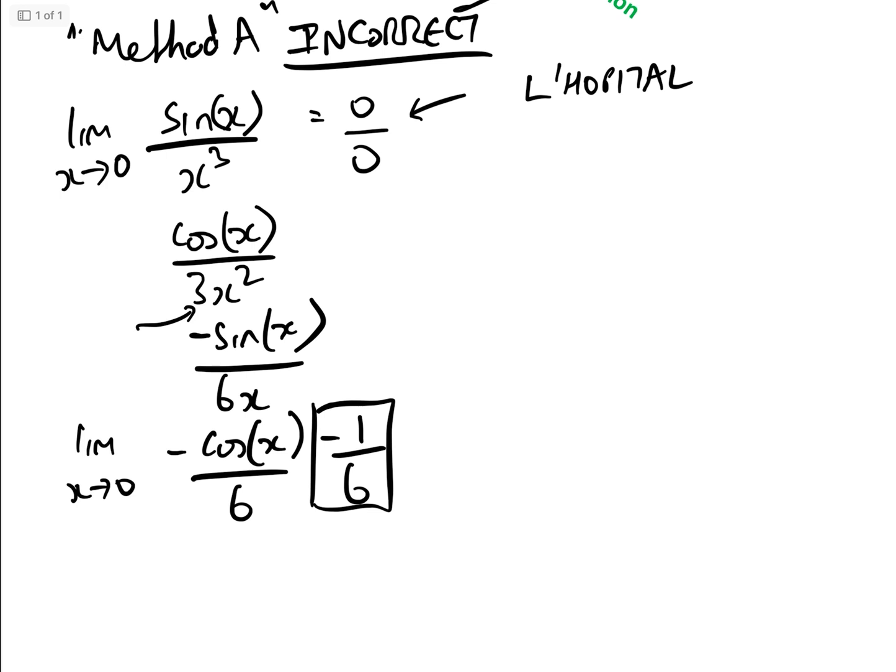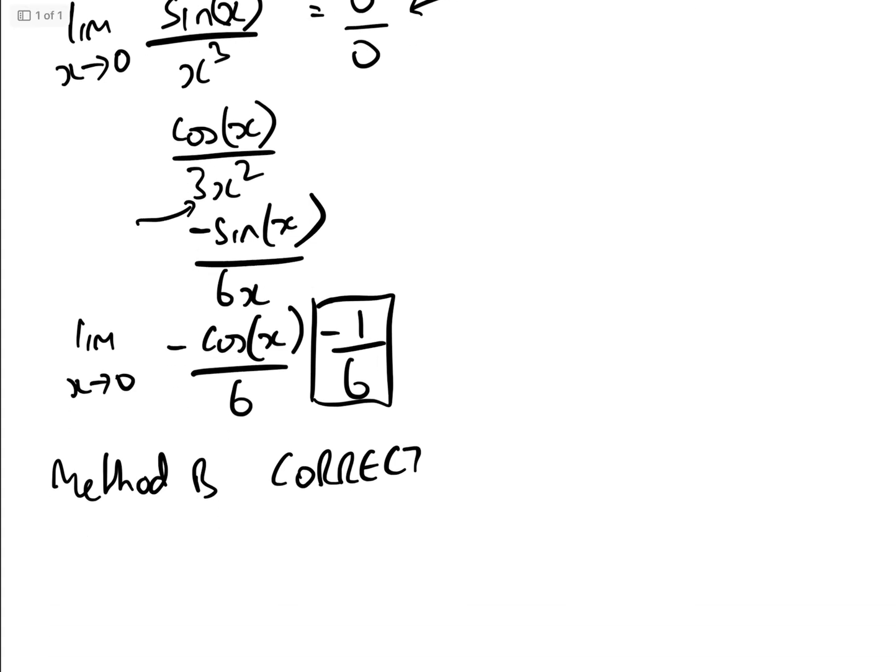Let's have a look at method B, which is the correct method. And then we will see where L'Hopital has gone wrong. So method B is actually relatively simple. We're just going to use the Taylor or Maclaurin expansion of sine x, which is x minus x cubed over 3 factorial, plus x to the 5 over 5 factorial.